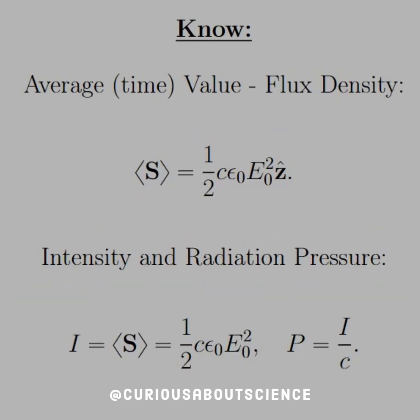All right, so what we need to know is the average time value or the flux density. The flux density is the angle brackets S. Again, this is not to deal with the vector notation. This is solely to do average value, sometimes called expected value, depending on how it's organized.